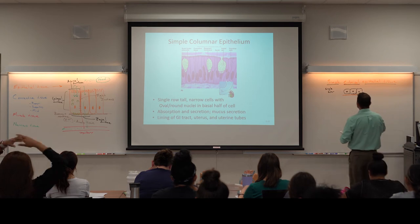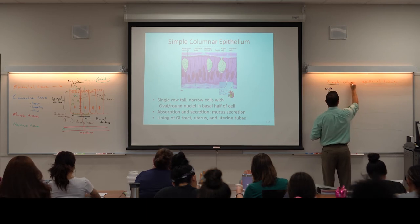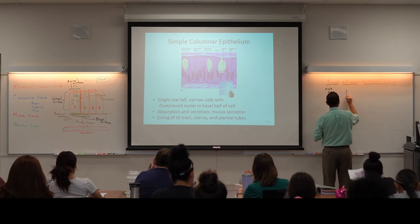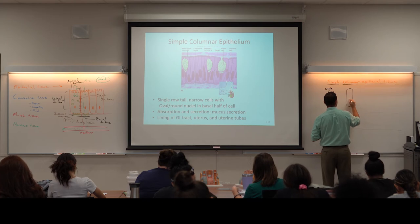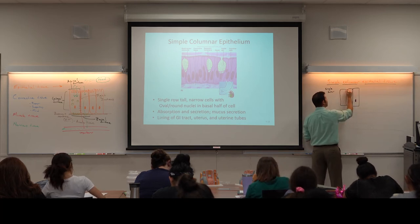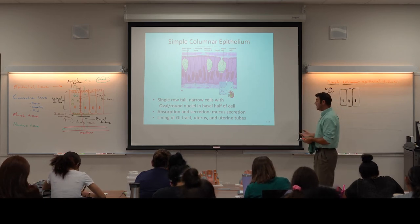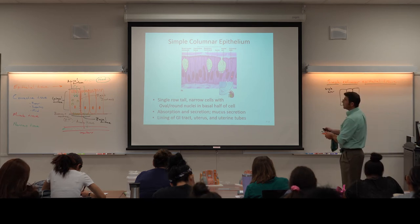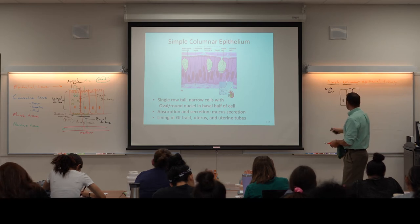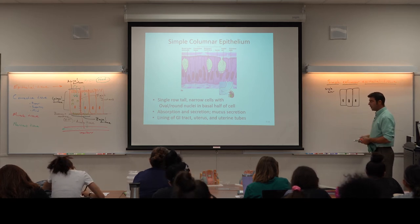Now we switch to simple columnar epithelial tissue. In simple columnar epithelial tissue, the cells are clearly taller than they are wide. You will also see the nuclei lining up at about the same place in the cell — that's one thing that makes it easy to see we're looking at a single layer of columnar-shaped cells. You find simple columnar epithelium in places like the lining of the stomach, the small intestines, and the large intestines.